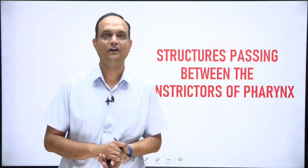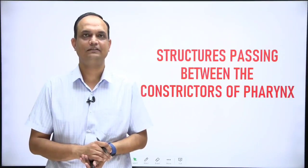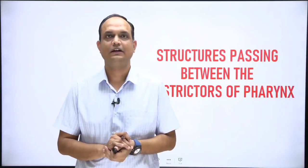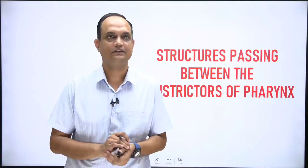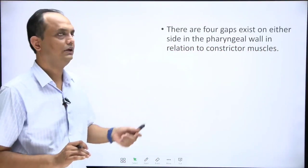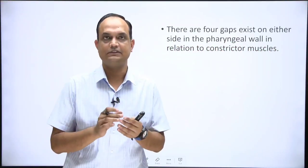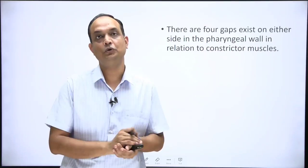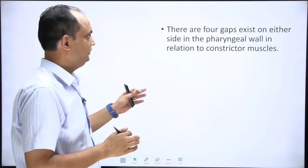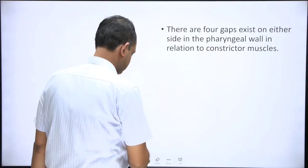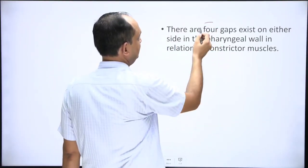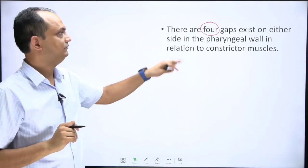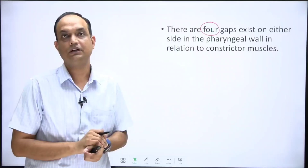Hello students. In the continuation of the lectures of pharynx, today we will discuss the structures passing between the gap of constrictors of the pharynx. The pharynx is made up of muscles forming a tube, and between the constrictors there are gaps present — a total of 4 gaps which exist on either side of the pharyngeal wall in relation to the constrictor muscles.